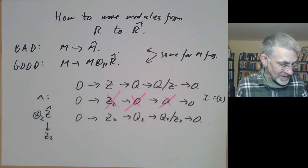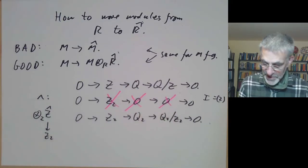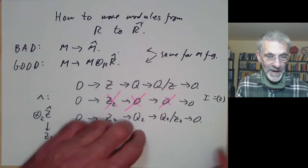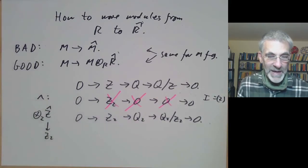Completion is badly behaved for modules that aren't finitely generated; instead of taking the completion for these modules, you should tensor with the completion of your ring, which behaves a lot better. The next few lectures will be about the dimension of rings.